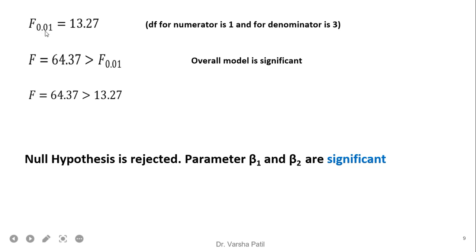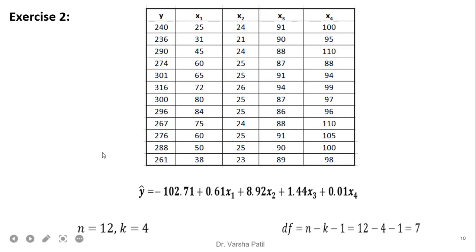F at 0.01 is 13.27 and our calculated value is 64.37. Since our calculated value is greater than the F-table value, the overall model is significant. Therefore the null hypothesis is rejected and parameters beta 1 and beta 2 are significant — meaning they contribute in linear regression.